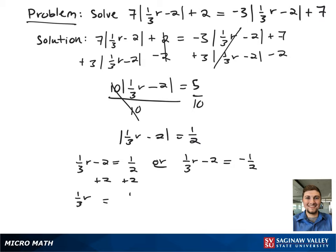Starting with the left-hand case, after adding 2 to both sides we get one-third r equals 5 halves. To eliminate the fraction, we multiply both sides by 3, giving r equals 15 halves.